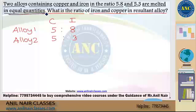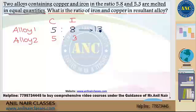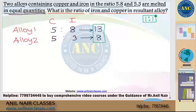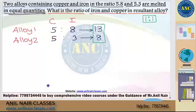Equal quantities means alloy 1 has 5 units of copper and 8 units of iron — totally 13 units. Alloy 2 has 5 units of copper and 3 units of iron — totally 8 units. The question says alloy 1 and alloy 2 should be melted in equal quantities, but 13 and 8 are not equal. Equal quantity means a 1:1 ratio finally after mixing. So I need to make 13 and 8 equal — I should take LCM of 13 and 8, which is 104.